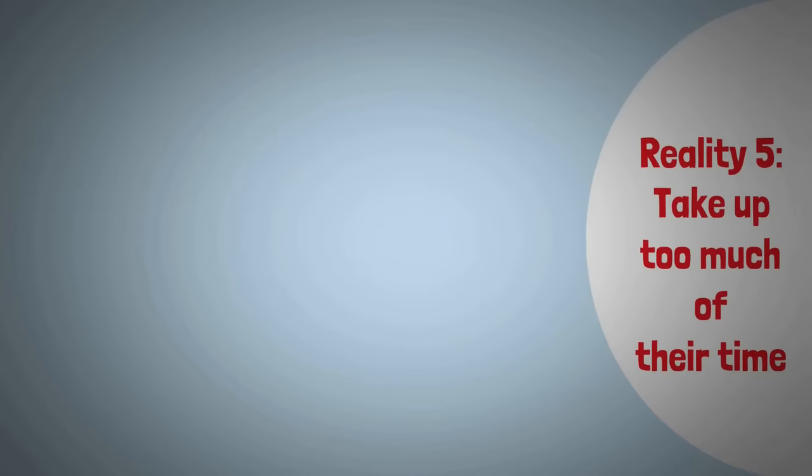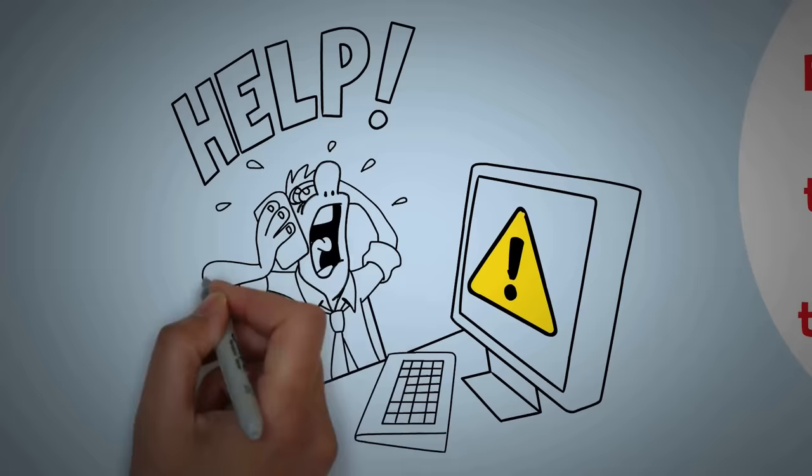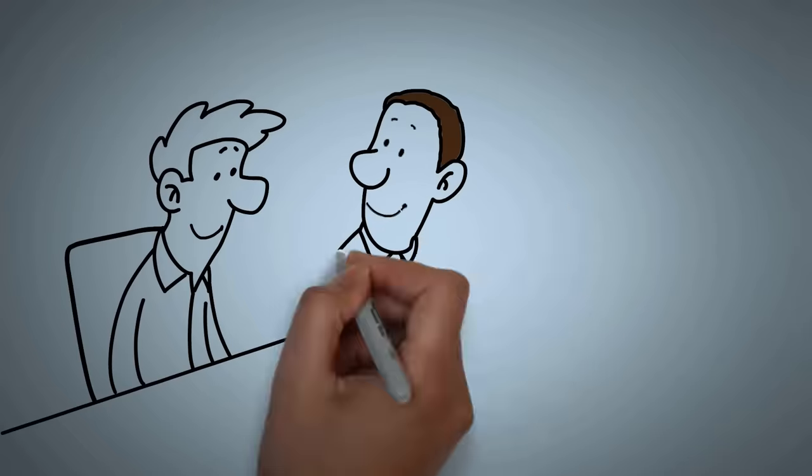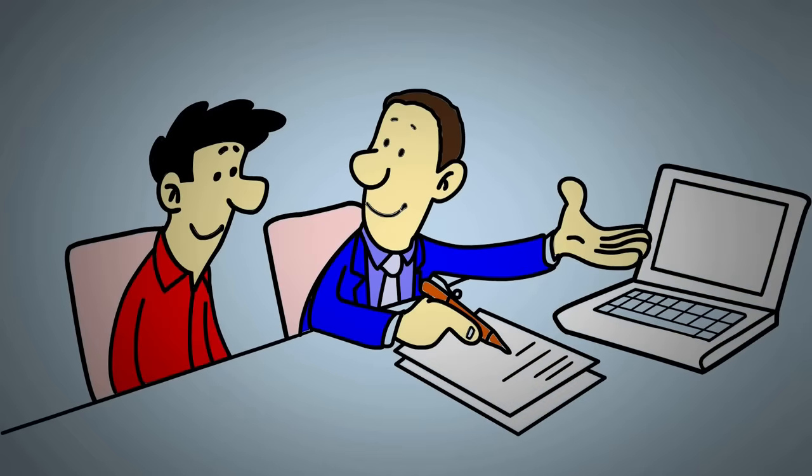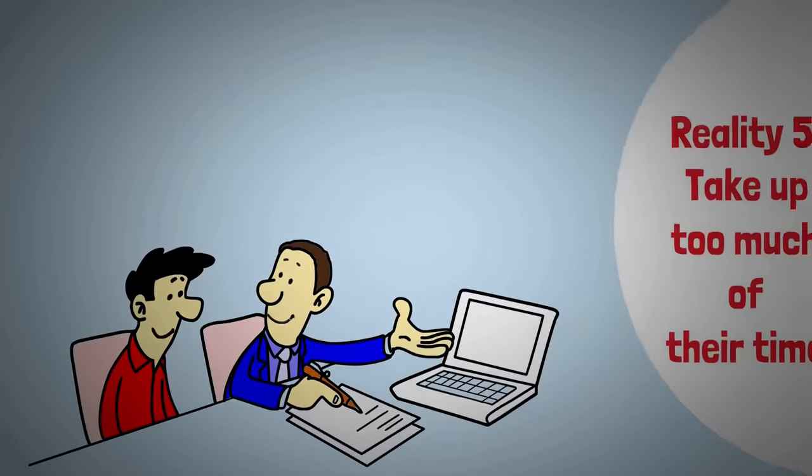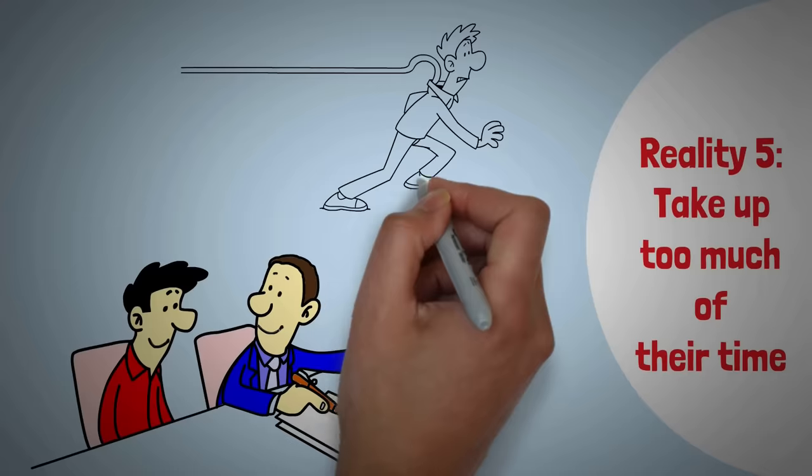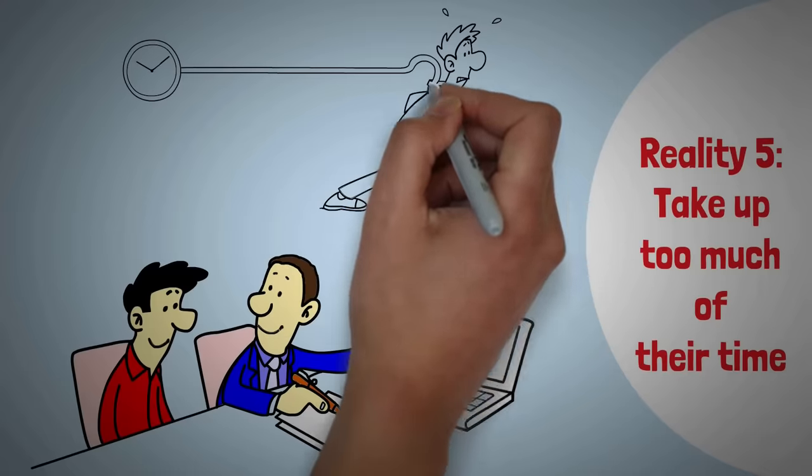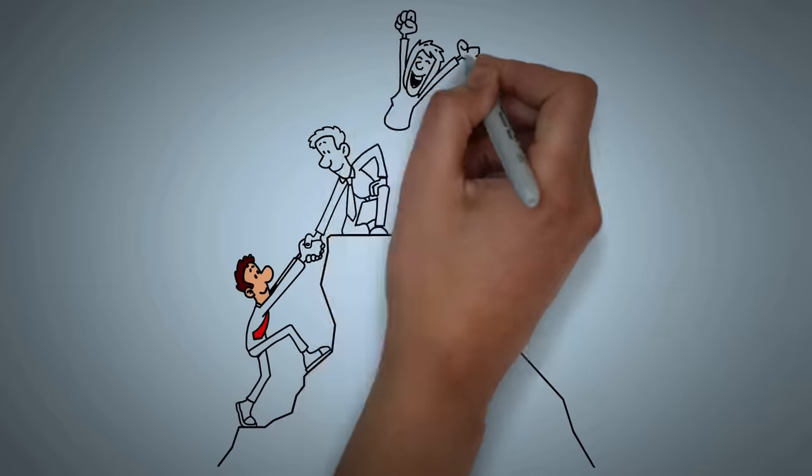Reality 5: Take up too much of their time. Sigma males are the kind of folks who've got kindness and generosity in spades. They're always ready to lend a hand, to help out. But here's the thing: they also value their time. They like to keep some of it reserved just for themselves, a slice of life where they can do their own thing.